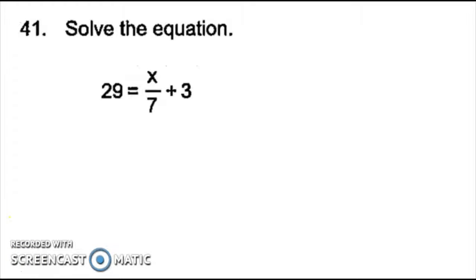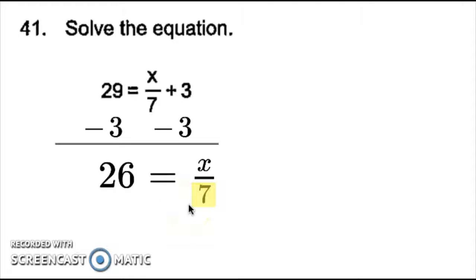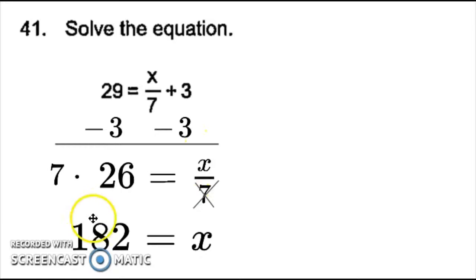Number 41, I have 29 equals x over 7 plus 3. The first thing that stands out to me is this x over 7, so I need to move everything away from that. If I cover that up, I see 3 is being added to it. So to undo that addition, the opposite of addition is subtraction, so I subtract 3 from both sides. 29 minus 3 is 26, so 26 equals x over 7. Since 7 is at the bottom, it means it is being divided. To undo that division, we have to multiply, so I cross out the 7, bring it to the other side, and multiply it to 26. Bring the x down, and that is equal to 7 times 26, which is 182. So my answer for number 41 is 182.